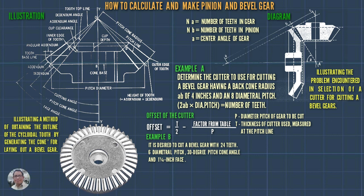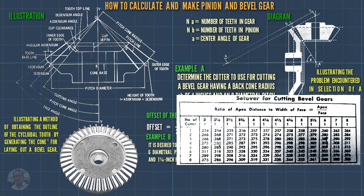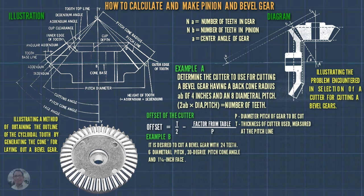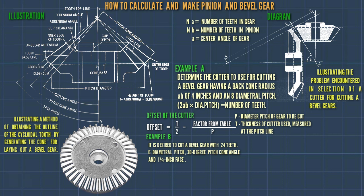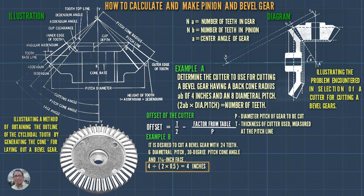This is the table of set-over values for cutting bevel gears. To obtain the factor from the table, the ratio of the pitch cone radius to the width of the face must be determined. The pitch cone radius equals pitch diameter divided by twice the sine of the pitch cone angle, which is 4 divided by 2 times 0.5, giving 4 inches.